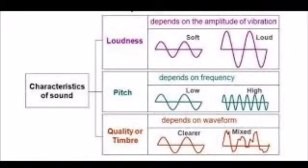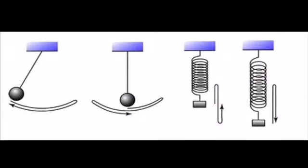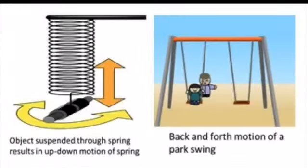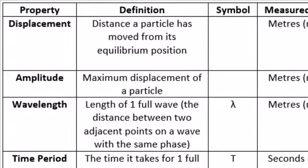Before discussing each term, let us understand what vibration is. Vibration is also known as oscillation. Oscillation means the movement of an object between one position and another, also called to-and-fro motion. The characteristics of oscillation can be described using frequency, amplitude, and time period.